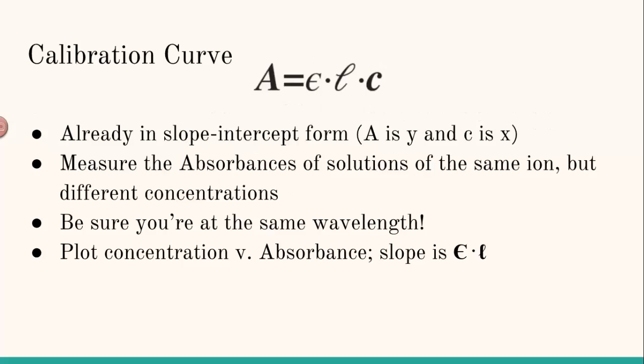The equation A equals epsilon LC is already in slope intercept form. So Y equals MX plus B, A is Y, C is X, that means the slope is epsilon L. That's our coefficient of X, coefficient of C in this case. So you can create a straight line, if you do this carefully enough, where you measure the absorbance of solutions that contain the same ion, so they have the same value of epsilon, but you vary the concentration.